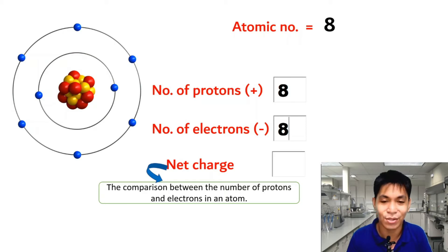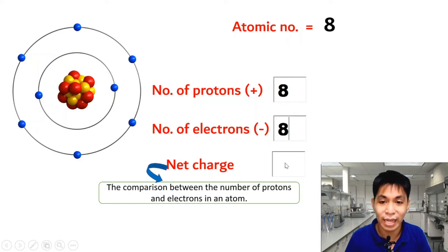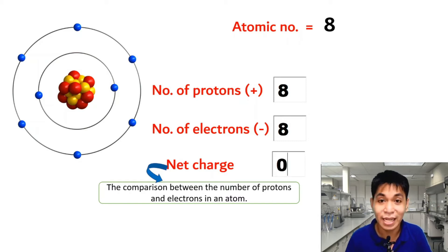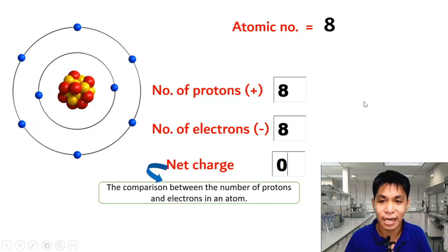Basically, net charge tells us which is greater — protons or electrons. In our example, the number of protons (positive) is equal to 8 and the number of electrons (negative) is equal to 8. Neither is greater than the other, so the net charge is equal to 0. If an atom has a net charge of 0, the atom is neutral.